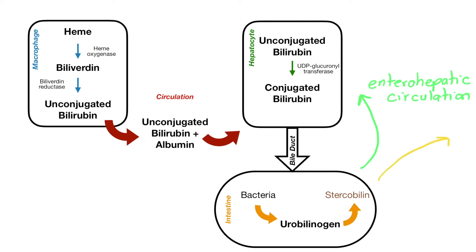Some of the reabsorbed urobilinogen is actually excreted in the urine in the form of urobilin, which has a yellowish pigment that gives urine its yellowish color. It's really interesting to see how bilirubin metabolism ends up in different places and how feces and urine get their own distinctive colors. I wouldn't stress too much about knowing the different enzymes unless you're taking Step 1, but overall just understand the overall mechanism of what happens once heme is broken down.